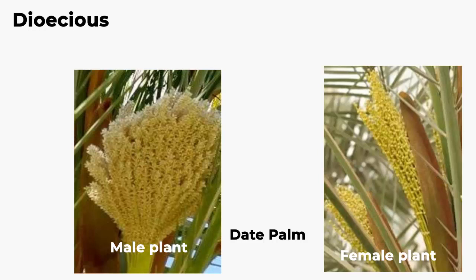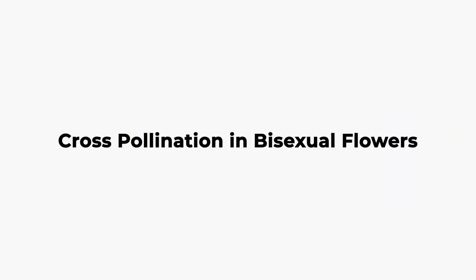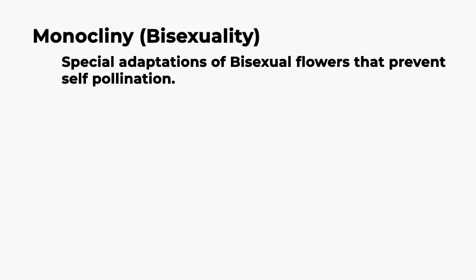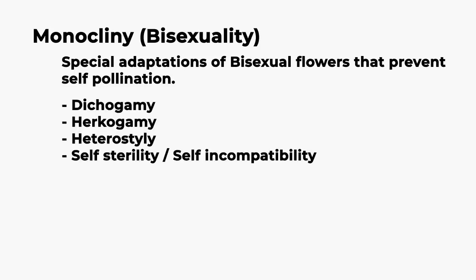Cross-pollination also occurs in bisexual flowers. These flowers have some special adaptations because they have more chances for self-pollination, as they have both sex organs in the same flower. To avoid self-pollination, these flowers have special adaptations called monocliney or bisexuality. There are four adaptations seen in bisexual flowers for cross-pollination: dichogamy, herkogamy, heterostyly, and self-sterility or self-incompatibility.